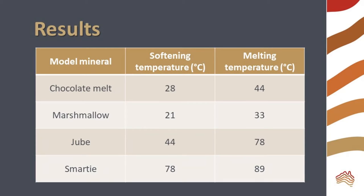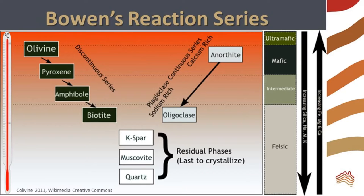The same is true of real minerals. In the early 1900s, geologist Norman Bowen determined the melting temperatures of the minerals that make up mafic magma. His results are summarized in the very useful Bowen's Reaction Series diagram.